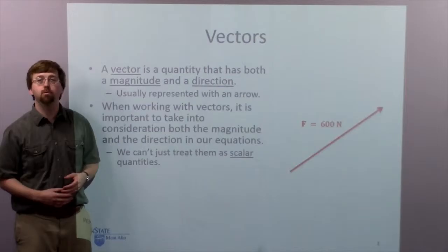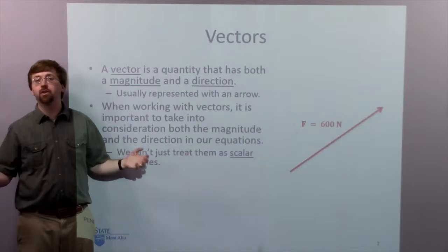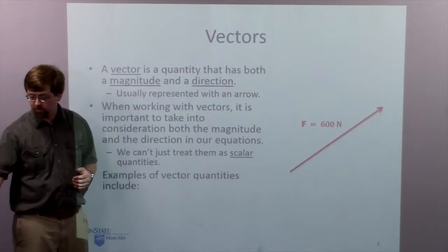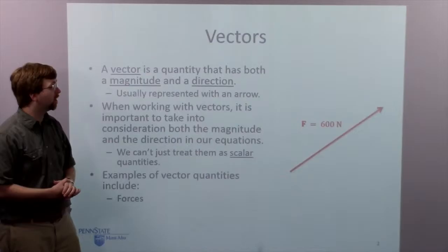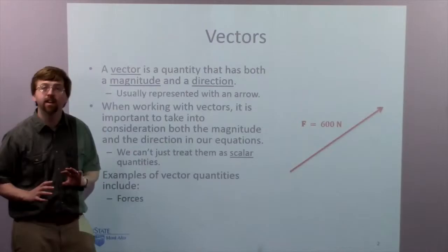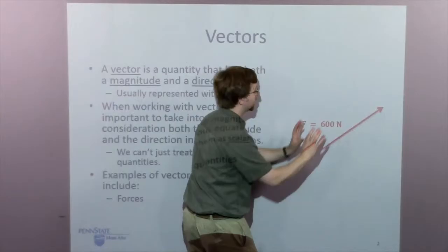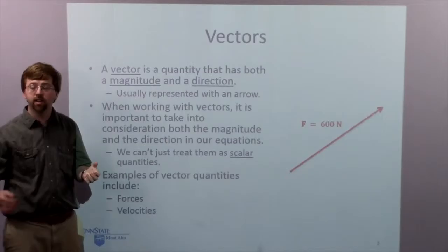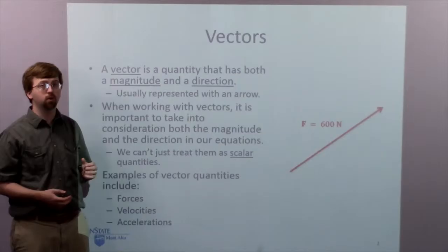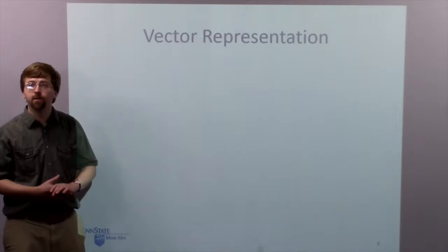An example of a scalar quantity would be something like mass — 600 kilograms of mass with no set direction. Examples of vectors include things like forces. I had a 600 Newton force right here, and in addition to having a magnitude, it's also going to have a direction — I'm pushing it in some direction, in this case kind of over this way and a little bit up. Other examples of vector quantities include velocities and accelerations. These are the three most common vector quantities we're going to experience in mechanics courses.